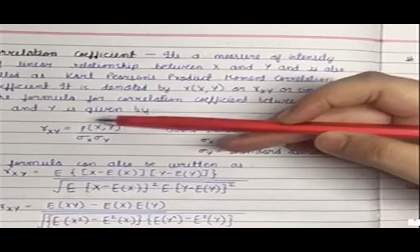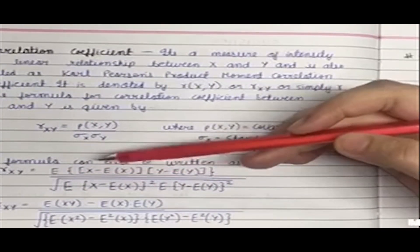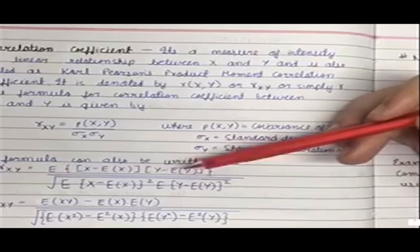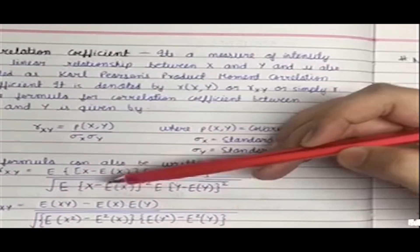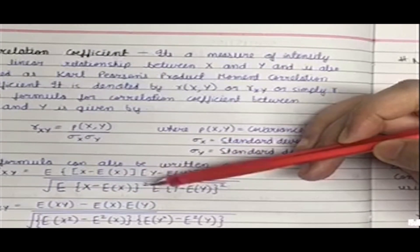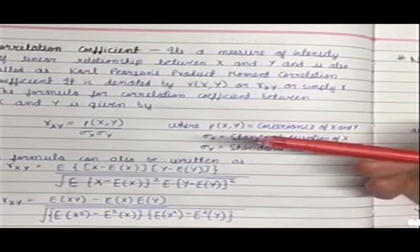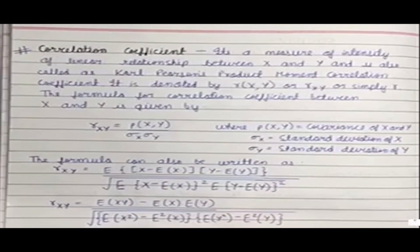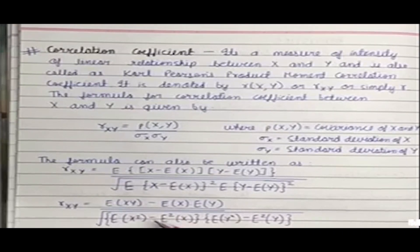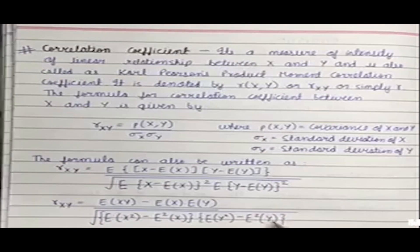When we expand this formula we get r(x,y) equal to E[(x − E(x))(y − E(y))] divided by the square root of E[(x − E(x))²] · E[(y − E(y))²]. Further solving, we get E(xy) minus E(x)·E(y) divided by the square root of [E(x²) − (E(x))²] · [E(y²) − (E(y))²].